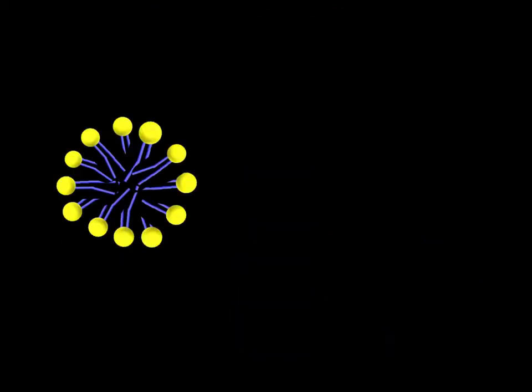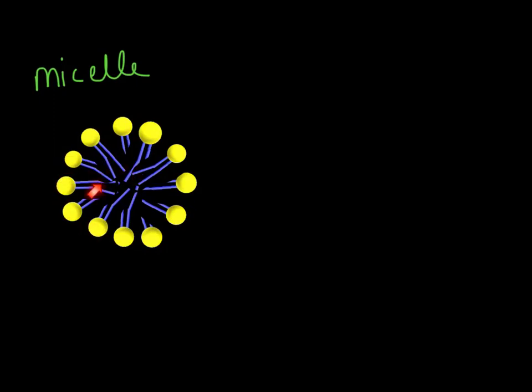If we were to randomly drop a whole bunch of phospholipids into water, they would form this circular shape right here, which is known as a micelle — just like how if you put soap or oil into water, it forms this little bubble, a little circular shape. All of those water-loving phosphate glycerol heads are interacting with the watery environment, and those water-fearing hydrophobic, nonpolar tails are in the middle.